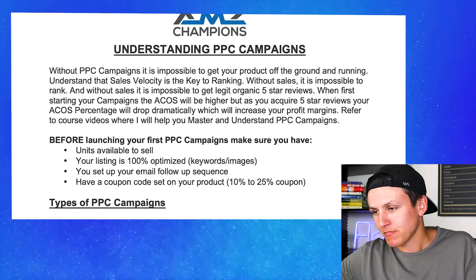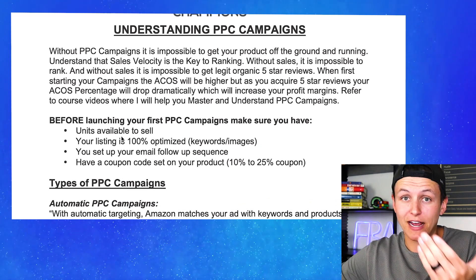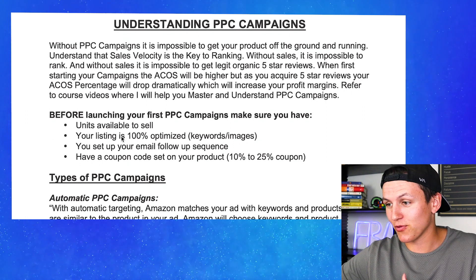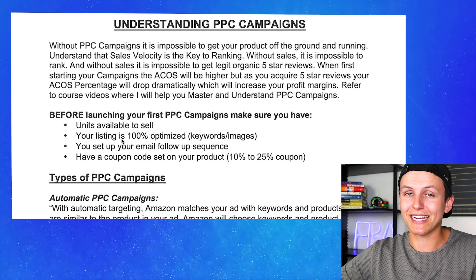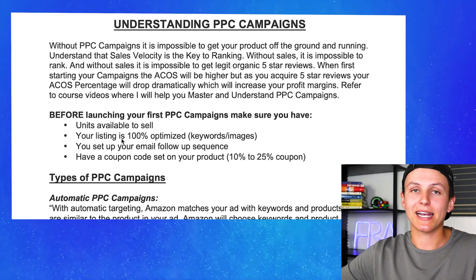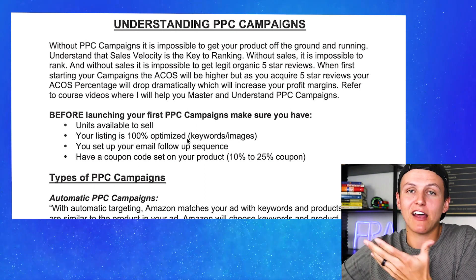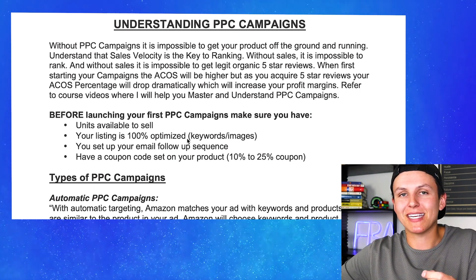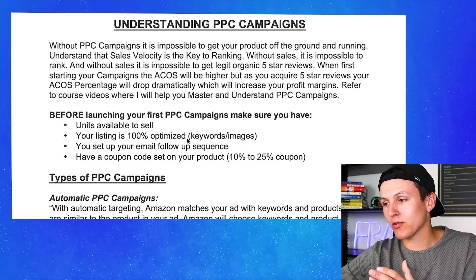Before you launch, you need to have units available to sell, an Amazon seller account, and a product ready to roll. Your listing needs to be 100% optimized — you have to have your keywords in the title, the bullet points, the description, and the back-end search terms. And obviously you need to have images. If you guys have bad images, your PPC campaigns are going to be absolute trash. It's very important to optimize your listing so that when you're showing your product on sponsored placements, they actually convert and look professional.